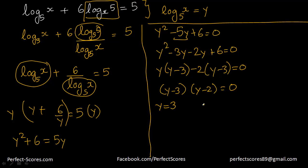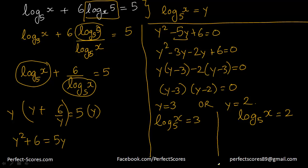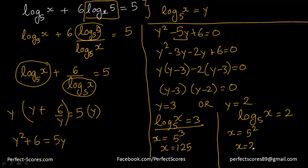So y could be 3 or y could be 2, which means log of x to the base 5 equals 3 or log of x to the base 5 equals 2. Converting back: x equals 5 to the power 3 or x equals 5 to the power 2, so x could be 125 or x could be 25. That is how we solve these problems.